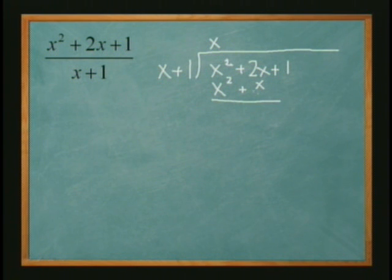And from here, just like long division, you subtract. x squared minus x squared is 0. 2x minus 1x is just x. Carry down the 1.